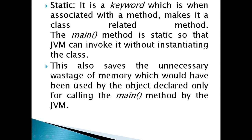We can make a method, a variable, or a class static. If you make a variable static it becomes a class variable. The Java main method is static so that JVM can invoke it without instantiating the class — meaning we can access the method without creating an object for that class.